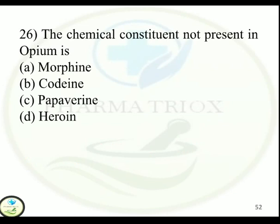Question 26: The chemical constituent not present in opium is — Option A: Morphine. Option B: Codeine. Option C: Papaverine. Option D: Heroin. Correct answer is Option D — Heroin.